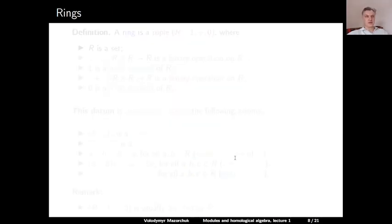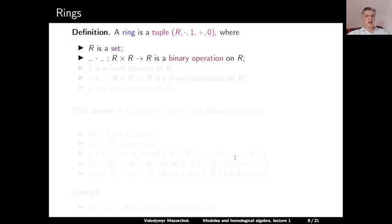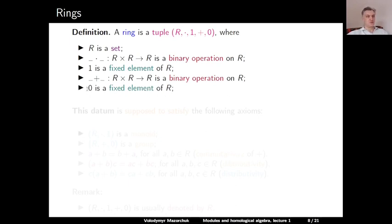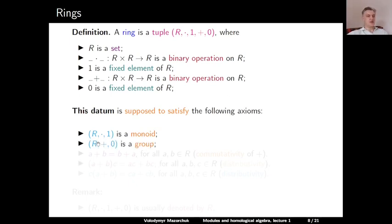Next, let us talk about rings. A ring is a tuple consisting of: a set R, a binary operation dot on R, a fixed element 1 in R, a binary operation plus on R, and a fixed element 0 in R. This datum satisfies the following axioms: with respect to multiplication and the element 1, we have a monoid; with respect to addition and the element 0, we have a group. Moreover, this group is commutative in the sense that for any A and B in R, A + B = B + A.